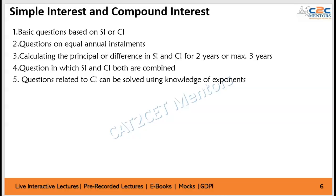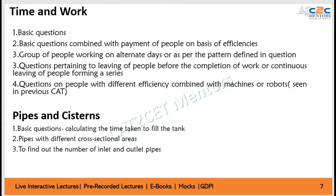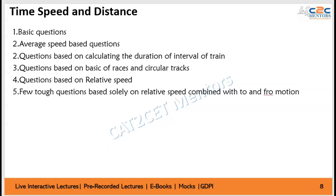SICI — Simple and Compound Interest — is absolutely a favorite topic of CAT. I have always mentioned in my AAG strategy that SICI is going to be the most important chapter. There are certain questions in SICI that you can directly crack using the Rule of 72. So SICI is something you really need to focus on.